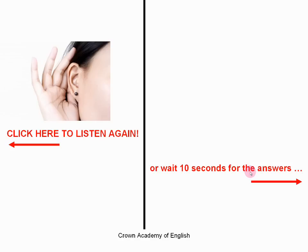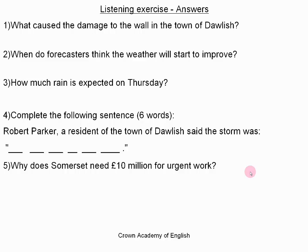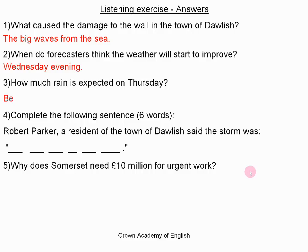We will now move on and I will give you the answers to the questions. Question one was: what caused the damage to the wall in the town of Dawlish? The answer is the big waves from the sea. Question two was: when do forecasters think the weather will start to improve? The answer is Wednesday evening. Question three: how much rain is expected on Thursday? The answer is between 20 and 30 millimeters of rain.